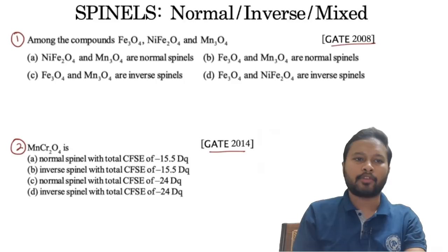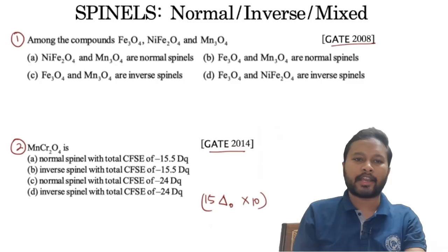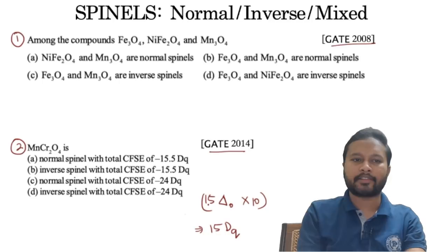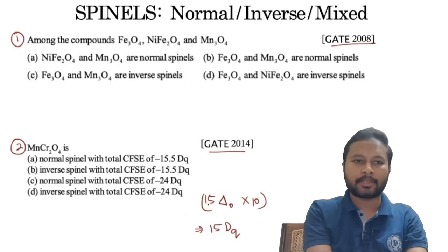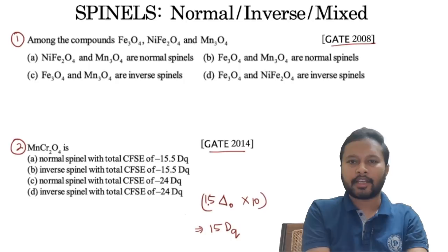Question 1 (GATE 2008): among the given spinel compounds, identify which are normal and which are inverse. Question 2 (GATE 2014): for MnCr₂O₄, determine the type of spinel and calculate the CFSE. Note: if CFSE comes out in Δₒ, multiply by 10 to convert to Dq units. Answer in the comments below. Thank you for watching — if you're new, please subscribe and like the video!